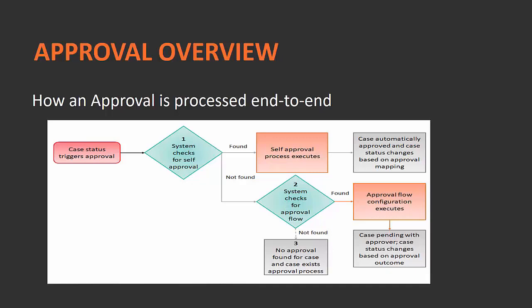Let us look at the approval overview. In the diagram you can see the approval being processed end-to-end. The case is in the assigned status and it triggers the approval. First it will check for the self-approval rules. If it does not match the self-approval rules, it goes and checks for the approval flows. If the approval flows do not match and no approval is found, the case will exit the approval process.